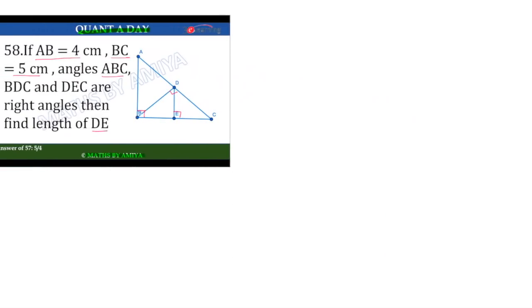First of all, you must know whenever you have a right angle within a right angle, it's a question of similarity. When AC is a right angle and BD is a right angle, you must know all three triangles are similar.